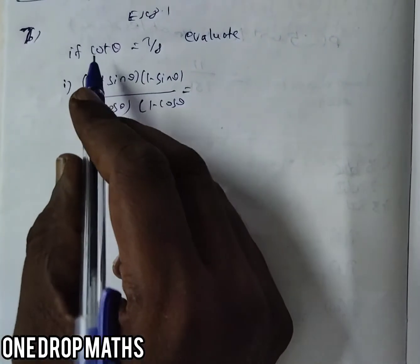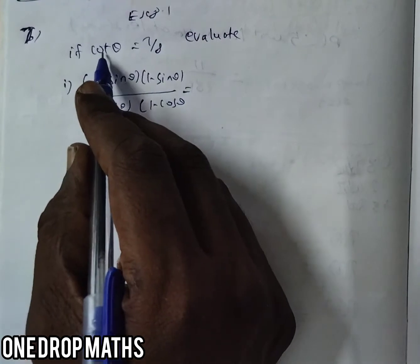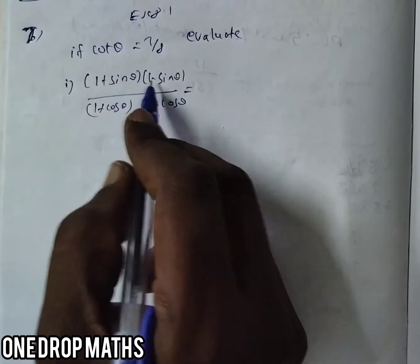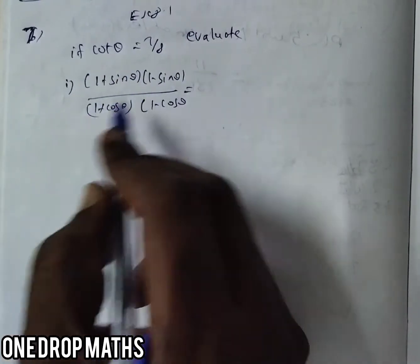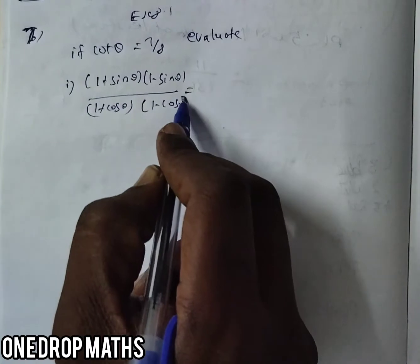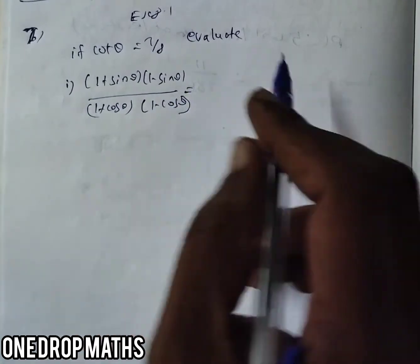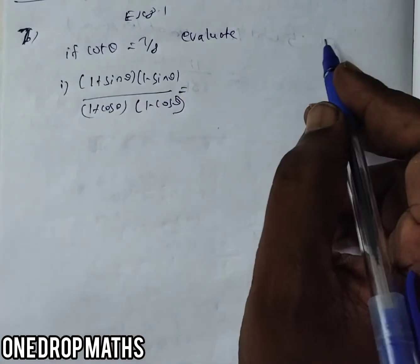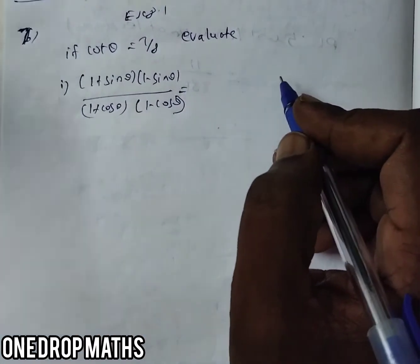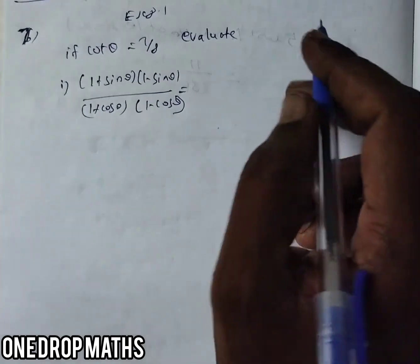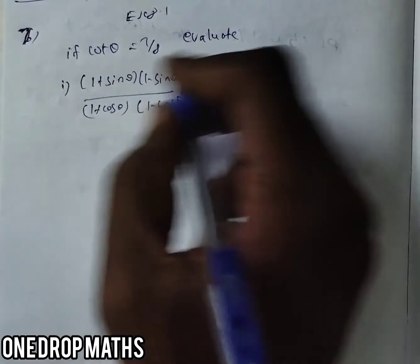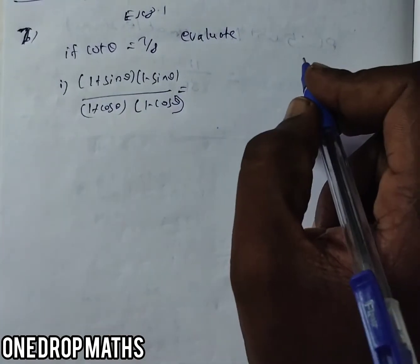If they ask to evaluate the given cot theta equals 7 by 8, with the expression (1 plus sin theta)(1 minus sin theta) over (1 plus cos theta)(1 minus cos theta), you can use trigonometry to find the ratio. This same sum can be solved in many ways, and here I am explaining one way.